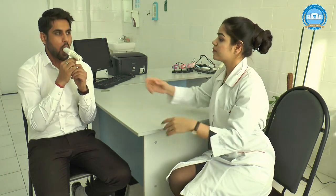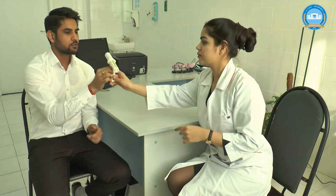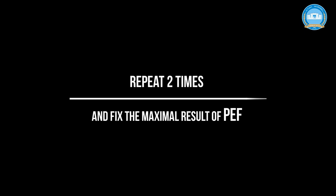Then we record the value on the scale at which the pointer stopped, repeat the procedure two times, and record the maximal result in the diary.